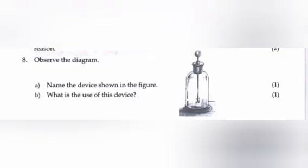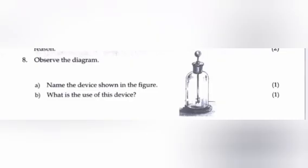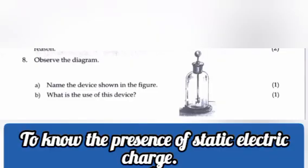Question 8. Observe the diagram. A. Name the device shown in this figure. Answer: Electroscope. B. What is the use of this device? Answer: To know the presence of static electric charge.